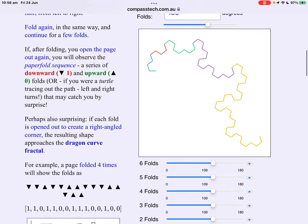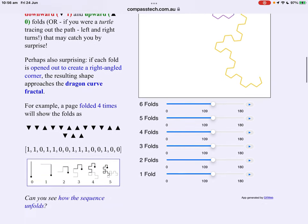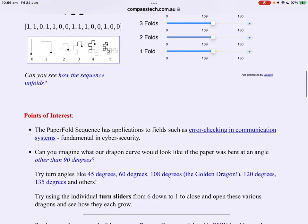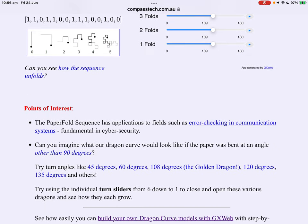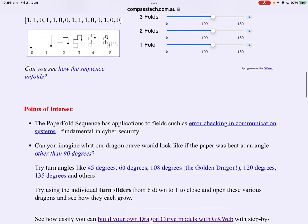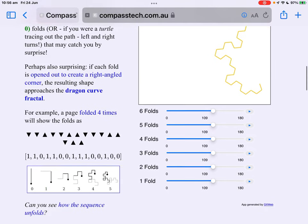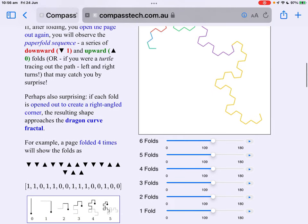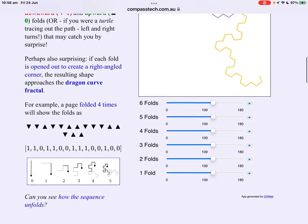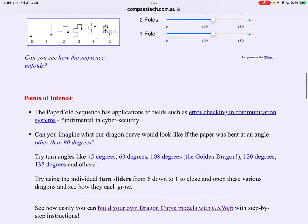The patterns become more interesting. Now this paper fold sequence has applications to fields such as cybersecurity, error checking and communication systems. But we're interested in it here from in some ways an artistic point of view. We get some beautiful patterns and perhaps some unexpected ones.